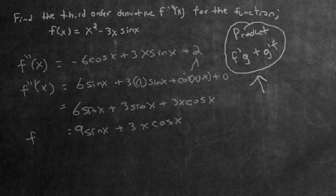And this is going to be the final answer — the third order derivative of f of x is 9 sine x plus 3x cosine x. I hope you enjoyed this video. If you have any questions, feel free to ask in the comment section below. I do hope you're having a fantastic day.